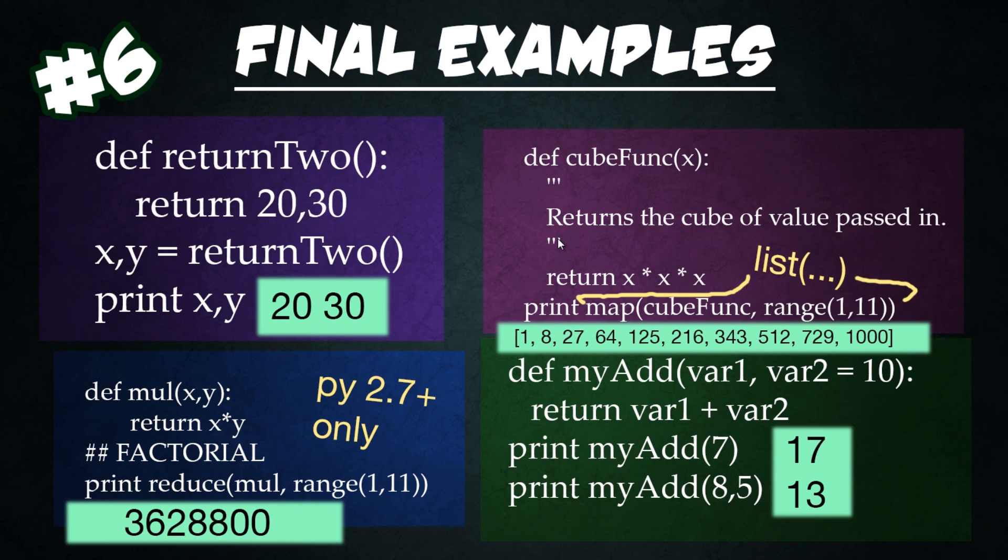Here we have the final examples for number six. This top left example was just to show you that you can actually output multiple values from a single function by using commas in between the values. So you can return 20 comma 30. And so if you just call a function, you'll be able to see it'll output 20 comma 30. Very simple.